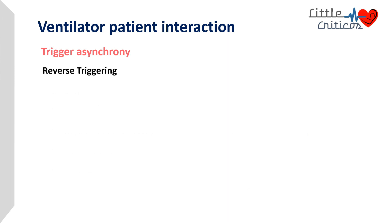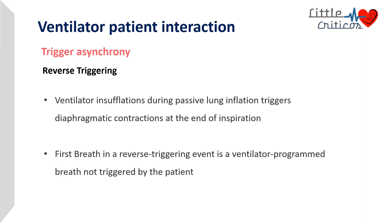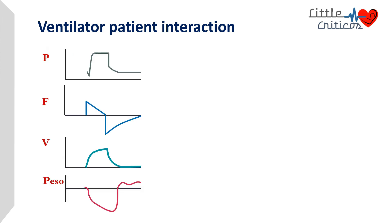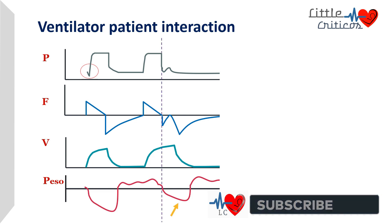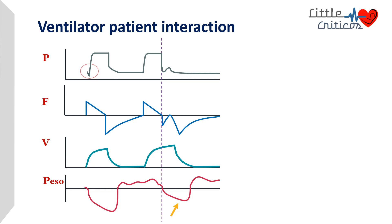Reverse triggering is a type of trigger asynchrony that is incompletely understood but increasingly recognized. The ventilator insufflation during passive lung inflation triggers diaphragmatic contraction at the end of inspiration. The first breath in a reverse triggering event is a ventilator-programmed breath, not triggered by the patient. In pressure-control mode, one can observe that at the end of inspiration, diaphragmatic contraction occurs, resulting in scooping of the flow loop towards the baseline and a slight increase in pressure.